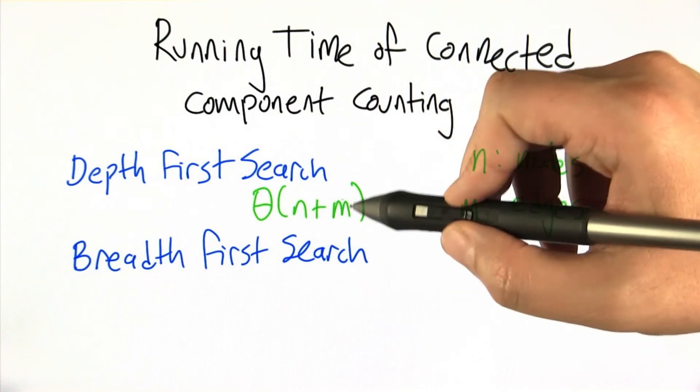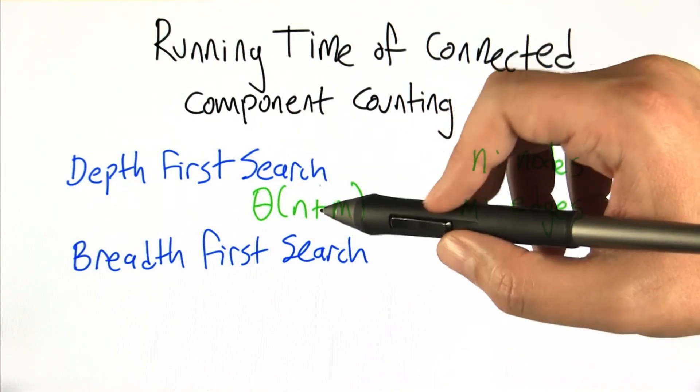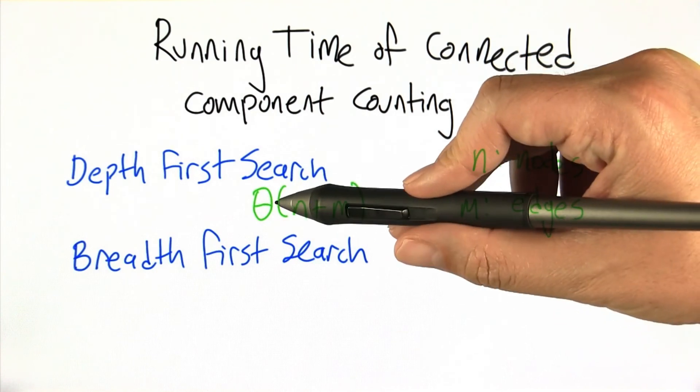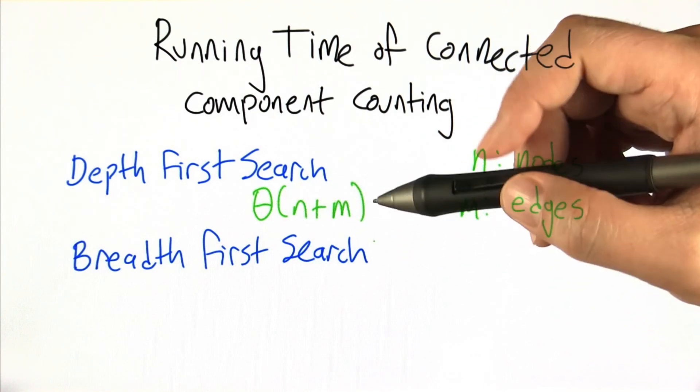It's worth pointing out that this is linear in the size of the graph. The graph consists of some number of nodes and some number of edges and that's the whole story. So this is actually linear in the size of the graph.